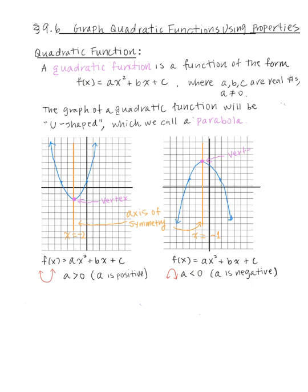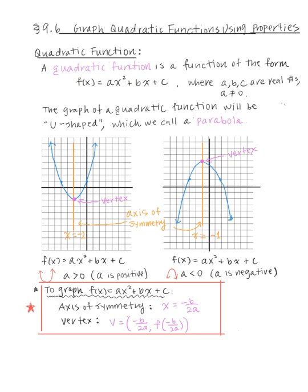In this section, we're going to graph the quadratic function precisely by finding the coordinates of the vertex, the equation of the axis of symmetry, and the x-intercepts and y-intercept. To graph f(x) = ax² + bx + c, the axis of symmetry is x = -b/(2a). That x-value is also the x-coordinate of the vertex. The vertex is given by v = (-b/(2a), f(-b/(2a))), where f(-b/(2a)) is the y-coordinate.